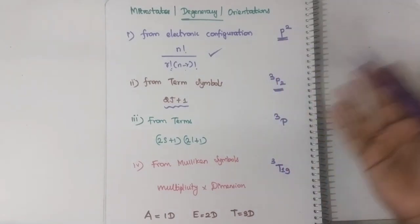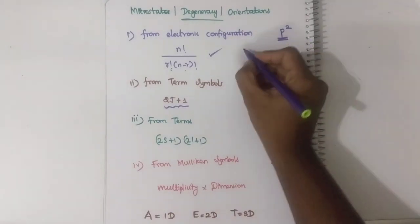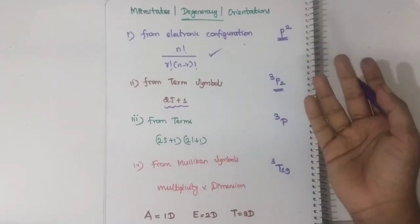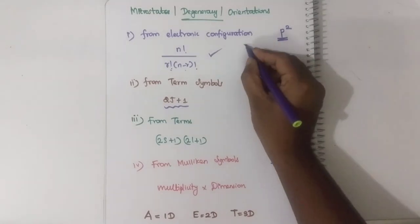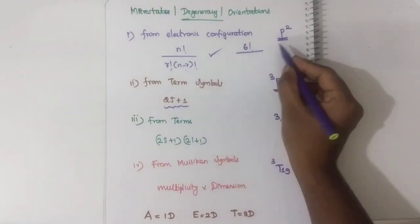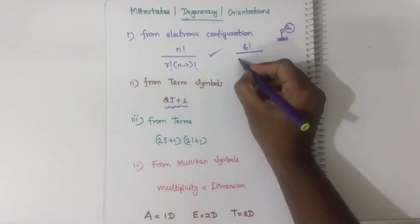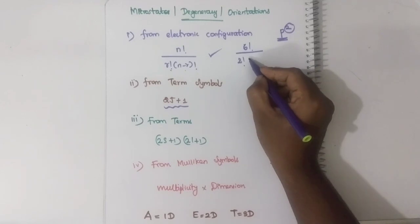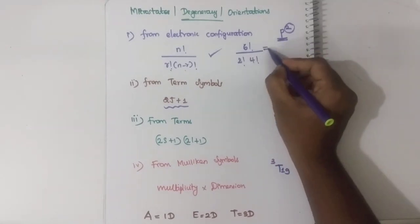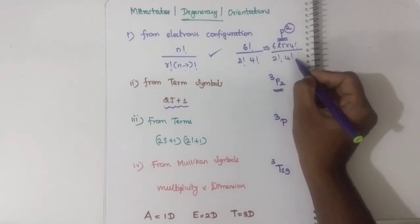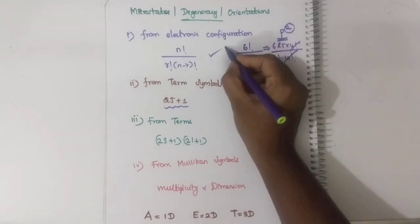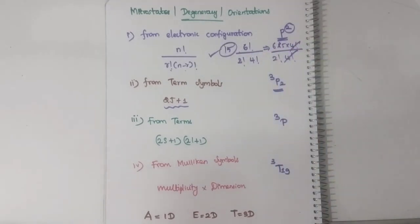Suppose we are having P2 as an electronic configuration. How will you calculate the microstates? N is nothing but the maximum number of electrons that the P orbital can accommodate. The P orbital can accommodate 6 electrons. Hence, it will be 6 factorial divided by R factorial - R means the number of electrons, which is 2 factorial - into 6 minus 2, which is 4 factorial. So 6 into 5 into 4 factorial divided by 2 and 4 factorial gives us 15. This is how you calculate the microstates from electronic configuration.